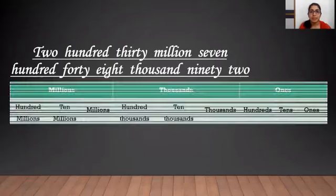So, placing the digits in the international place value chart, we have 230 million. So, under the millions period, we will have 230, that is 2, 3 and 0.